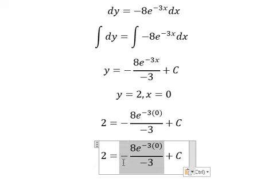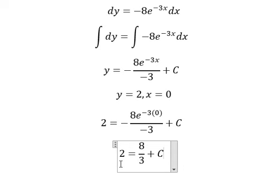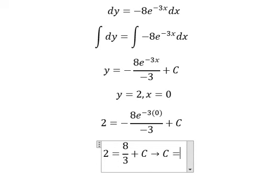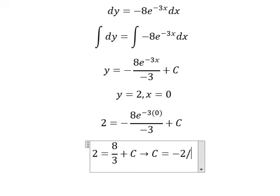So this one we simplify and we have 8 over 3, so C equals to negative two over three.